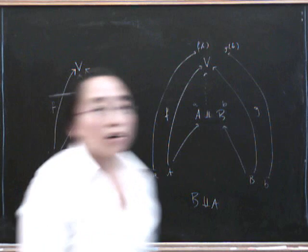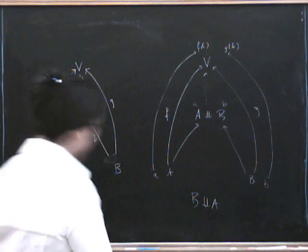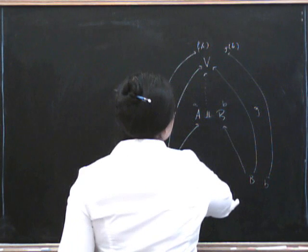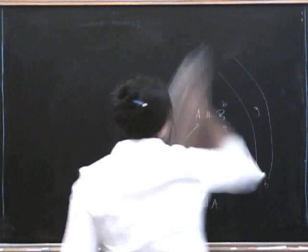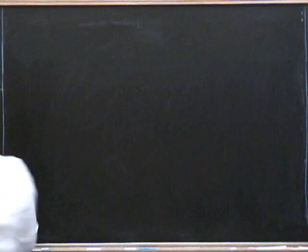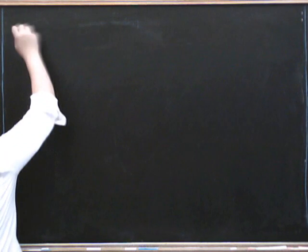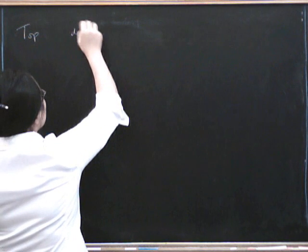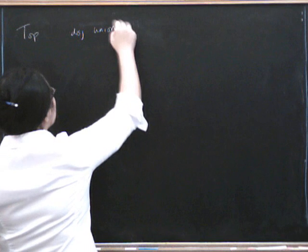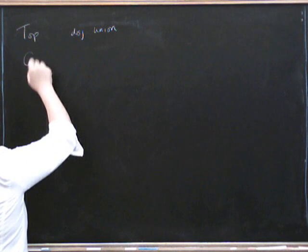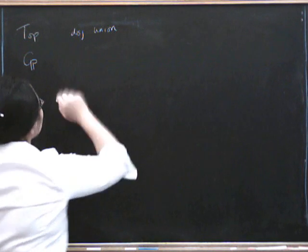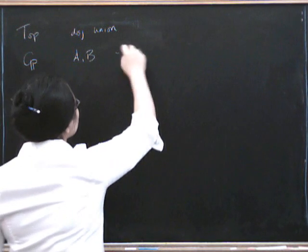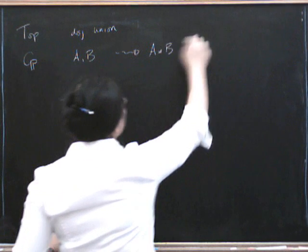And we've got a whole load of examples in all the places that we just had before. So let's talk about those. Okay, so what have we got? In the category of topological spaces, we've just got disjoint union. In the category of groups, we have given A and B, we've got the free product, A star B.